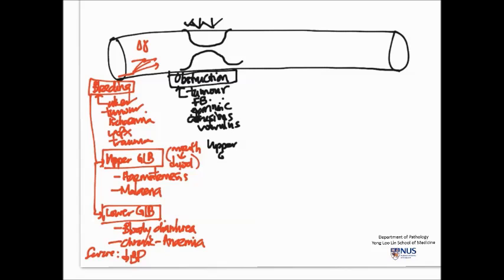The symptoms are different for upper GI obstruction, say in the esophagus or stomach, versus lower GI obstruction. Patients may present with early satiety in upper GI obstruction, sometimes dysphagia or difficulty swallowing, and they also may experience nausea and vomiting.